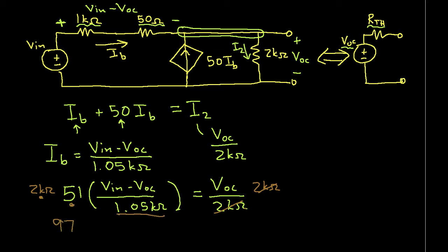So we compute the constant in front of VN minus VOC. And we get 97.14 VN minus VOC is equal to VOC.